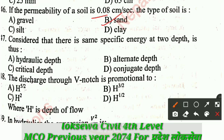Question number 47: When there is the same specific energy at two depths, those depths are called: A - hydraulic depth, B - alternate depth, C - critical depth, D - conjugate depth. The correct answer is B: alternate depth - when there is the same specific energy at two depths.